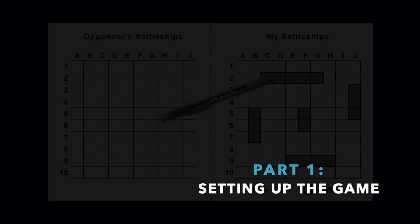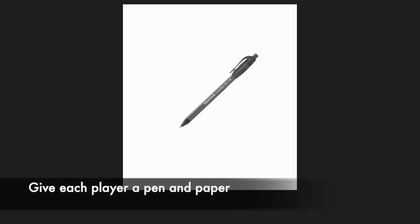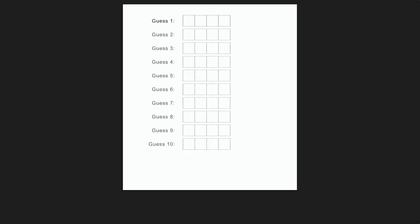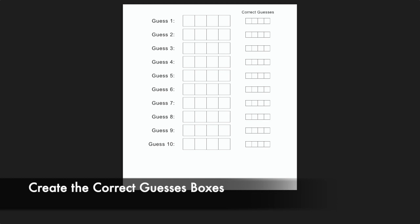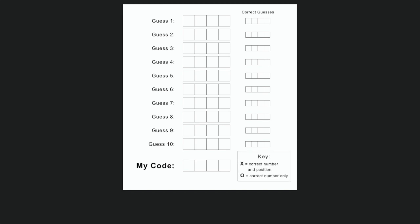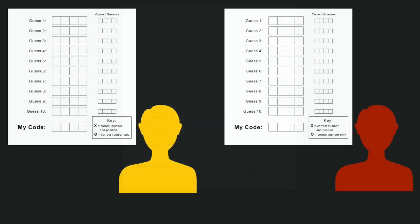To play the game of pen and paper mastermind, first set up the game. Give each player a sheet of paper and a writing utensil. At the top of the page, each player will draw four connected boxes and write guess one next to it. Make nine more of these, increasing the guess number by one each time. Next to each of these, make a smaller version of the four connected boxes and write correct guesses above them. On the bottom right corner of the page, write my code and make another four boxes. Also make a key: X will represent the correct number and correct position, and O will represent just the correct number.